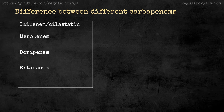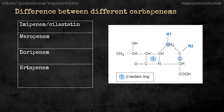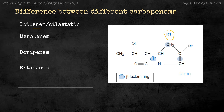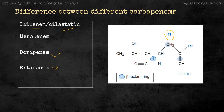As you can see in the structure, imipenem does not have an R1 group — it only comes with the R2 group, meaning there is no molecule attached at the R1 position. Therefore, imipenem is destroyed in the kidney by an enzyme called dehydropeptidase, and it needs to be combined with an enzyme inhibitor called cilastatin. Cilastatin prevents imipenem from being destroyed by this renal enzyme.